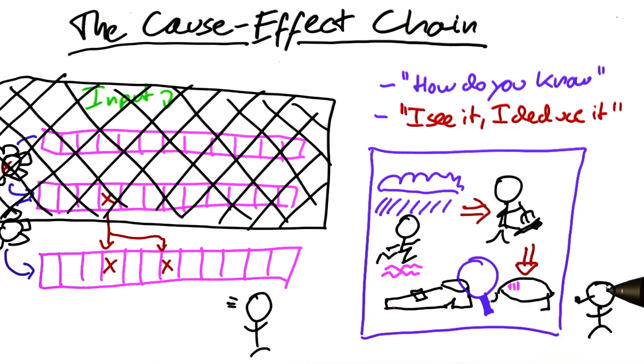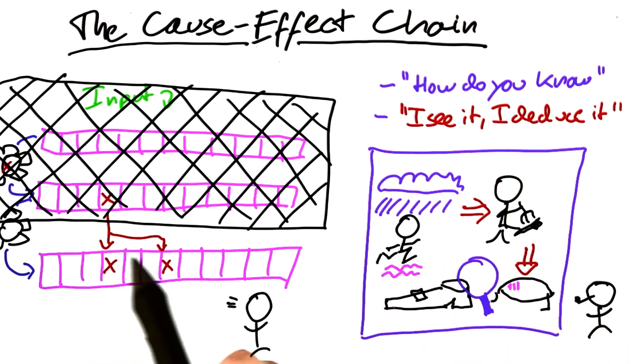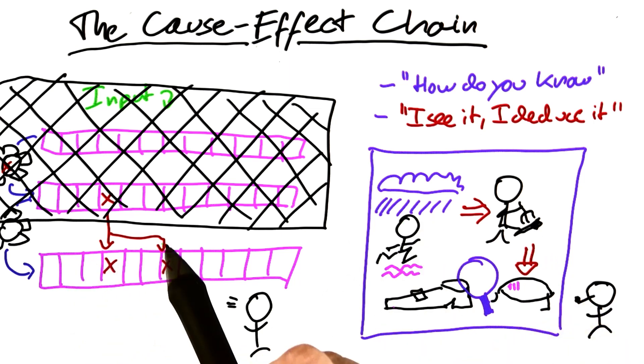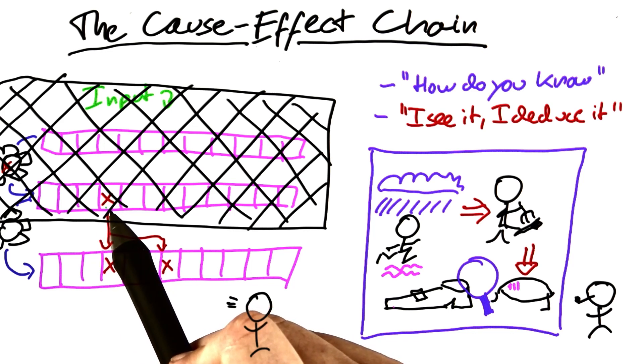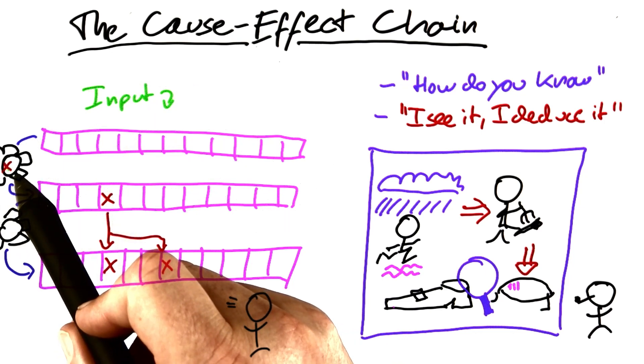This is where the Sherlock Holmes method of debugging comes into play. What we must do, like Sherlock Holmes, is to think backwards from our observations to find out what has really happened. In debugging, we start with a failure and think backwards what could be the possible cause such that we can finally discover the reason.